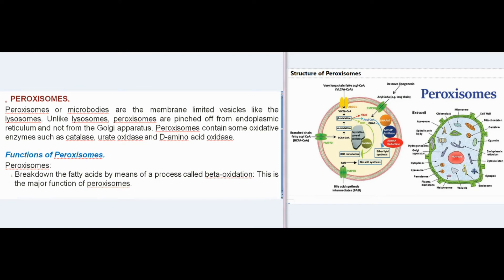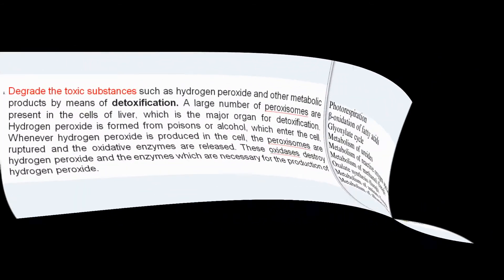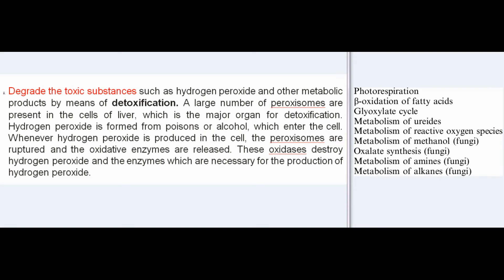Peroxisomes or microbodies are membrane-limited vesicles like lysosomes, but unlike lysosomes they are pinched off from the endoplasmic reticulum rather than the Golgi apparatus. Peroxisomes contain some oxidative enzymes such as catalase, urate oxidase, and D-amino acid oxidase. Their main function is breaking down fatty acids by beta-oxidation. They also degrade toxic substances such as hydrogen peroxide by detoxification. A large number of peroxisomes are present in liver cells, the major organ for detoxification.